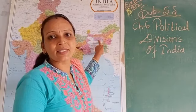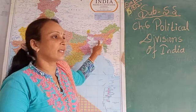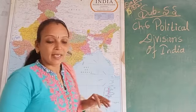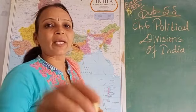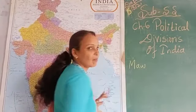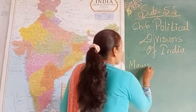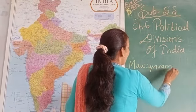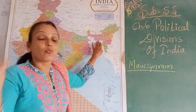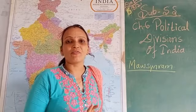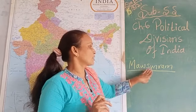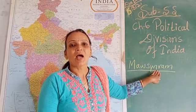Meghalaya is the place that receives the highest rainfall in the world. There is a place in Meghalaya called Mawsynram, which is known for the highest rainfall in the whole world.